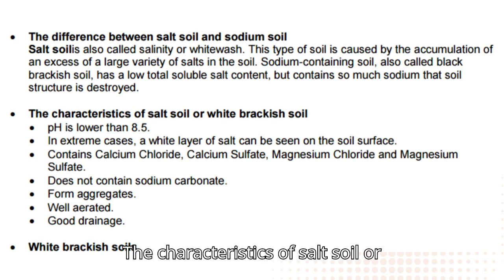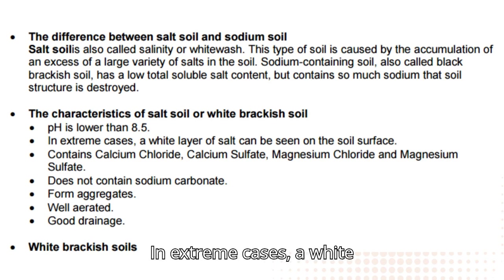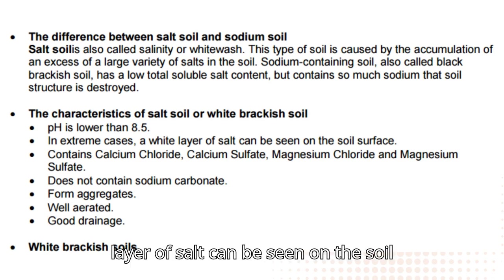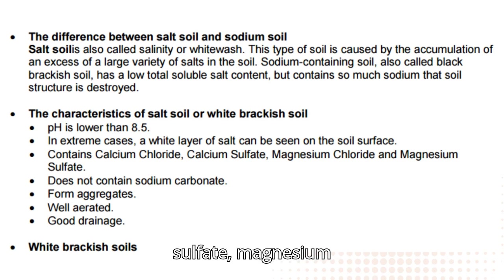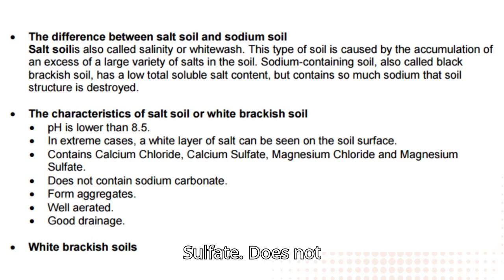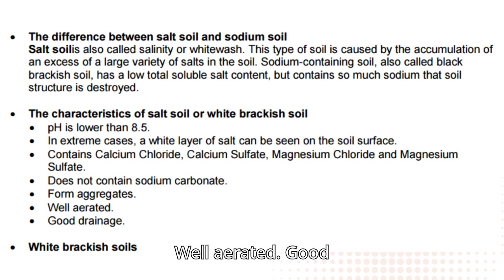The characteristics of salt soil or white brackish soil: pH is lower than 8.5. In extreme cases, a white layer of salt can be seen on the soil surface. Contains calcium chloride, calcium sulfate, magnesium chloride, and magnesium sulfate. Does not contain sodium carbonate. Forms aggregates. Well aerated with good drainage.